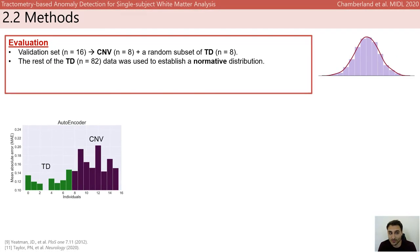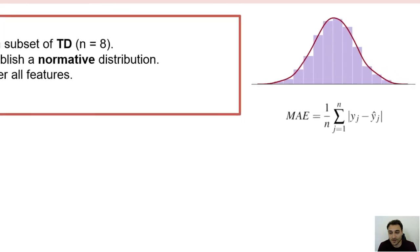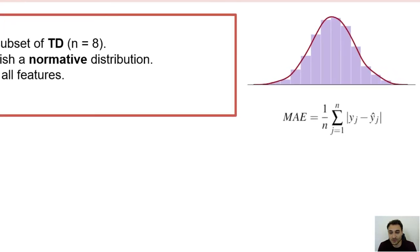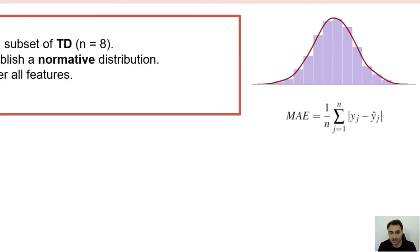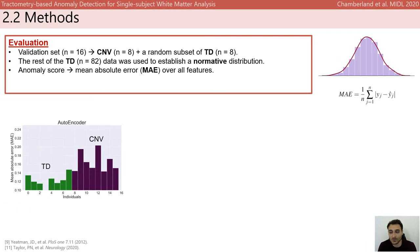The rest of the healthy controls data was used to establish a normative distribution. The mean absolute error was derived by computing the absolute differences between the reconstructed microstructural features and the raw input features of the autoencoder. To derive conservative estimates and assess variation within the model, we repeated the process a hundred times.